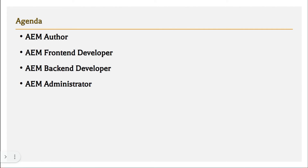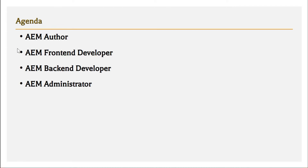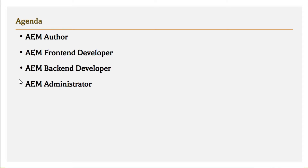Let's get started with the presentation. According to me, these are the four paths which you could take in order to get into an AEM job. The first one is the most simplest way, which is being an AEM author. The second two are more of the developer-oriented roles: front-end development and back-end development. If you are well-versed with both, then you are called a full-stack developer. And the fourth one is being an AEM administrator. To get into an AEM job quickly, you can choose any one of these four paths and focus on mastering that alone.